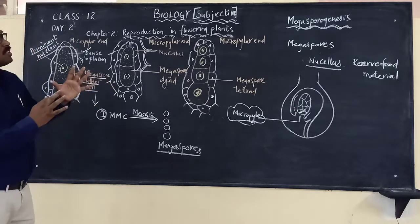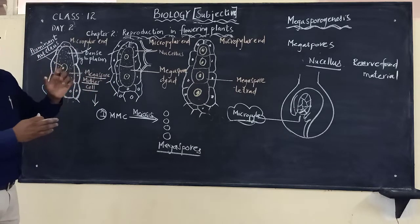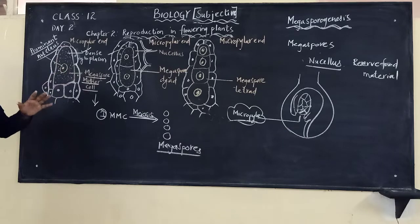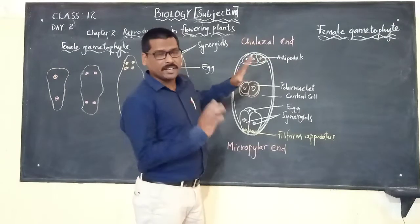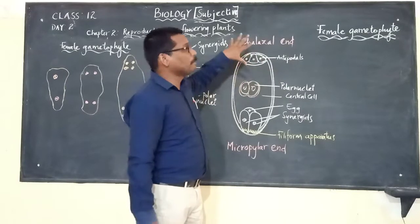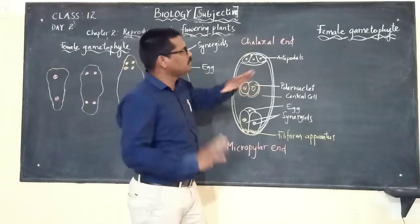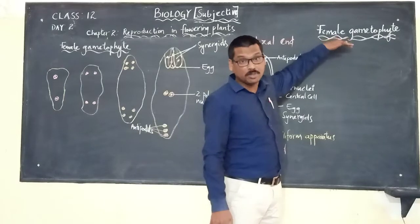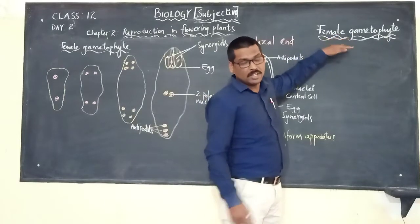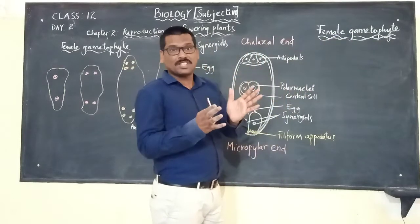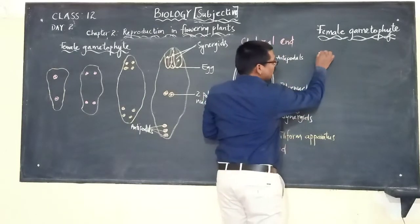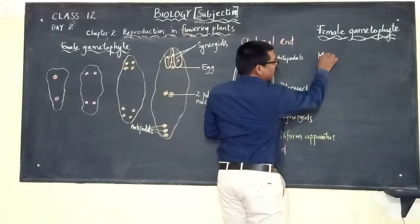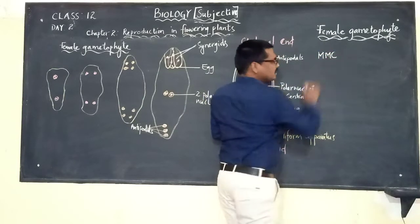We are going to study in detail how the embryo sac — the female gametophyte — is formed. We just completed megasporogenesis. At the end of megasporogenesis, four cells are formed from the megaspore mother cell.